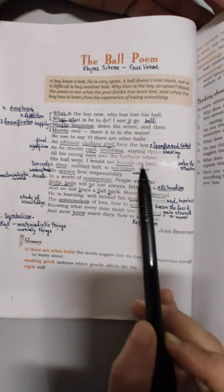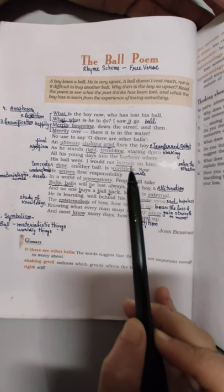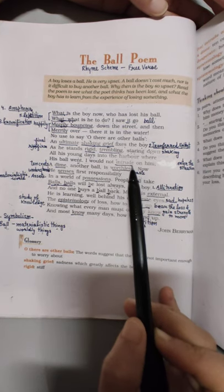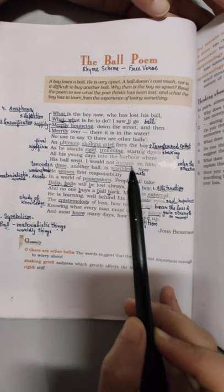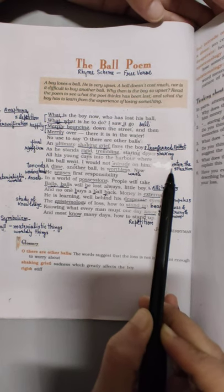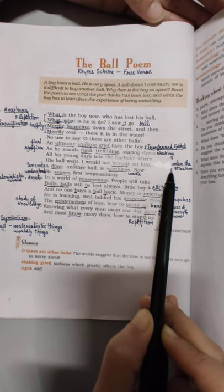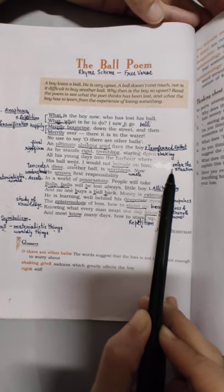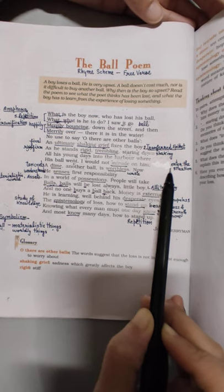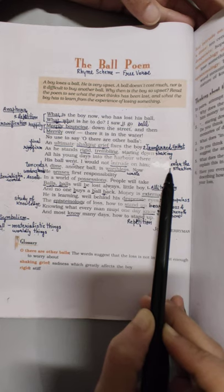I would not intrude on him. Poet kehta hai intrude means kisi ki matter mein interfere karna. Lekin yaha according to the situation, intrude ka meaning enter the situation. Ki ab mein uski is dukh ki ghari mein, is moment mein jab woh bohut dukhi hai, I will not intrude, I will not enter the situation. Mein uske paas nahi jaunga or usko kisi bhi tareeke se console nahi karunga, santwaana nahi dunga, comforted feel nahi karunga.